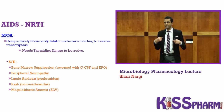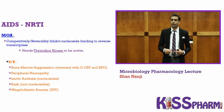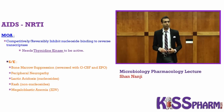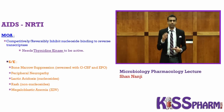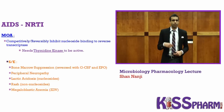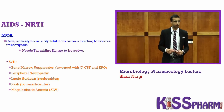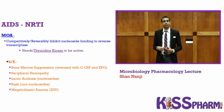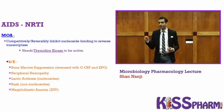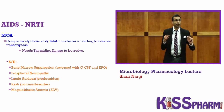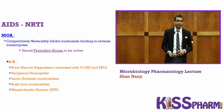Let's go over the NRTI side effects together: bone marrow suppression, lactic acidosis, megaloblastic anemia, and peripheral neuropathy. Bone marrow suppression can be reversed with G-CSF and EPO.